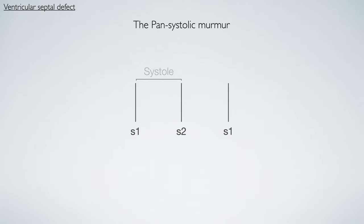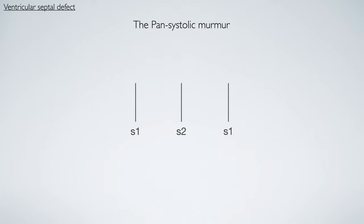Now let's turn our attention to ventricular septal defects. This presents as a pansystolic murmur, which means it occurs throughout the entire duration of systole. This murmur can be visually represented with a plateau wave. To commit this murmur to memory, think about a burring noise that occurs throughout the duration of systole.